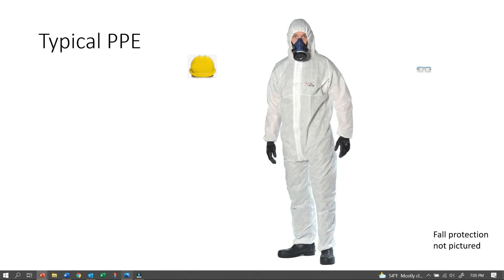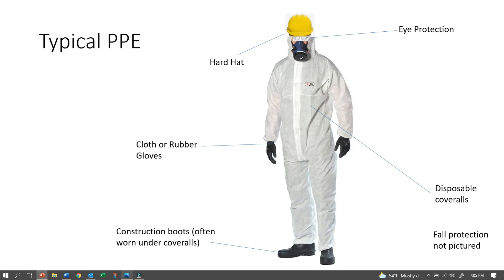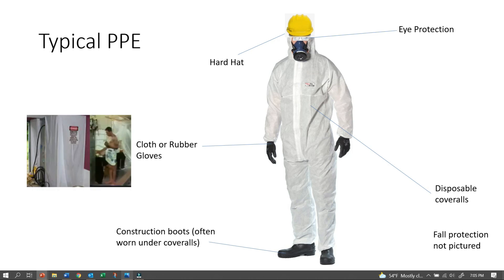PPE in the form of hard hats, eye protection, cloth or rubber gloves, construction boots, and similar items protect the worker against physical harm. Disposable coveralls help prevent carryout exposures where hazardous materials are on the body of the worker, sometimes enhanced by the use of a shower.